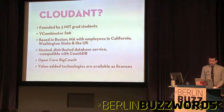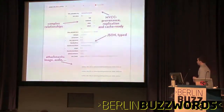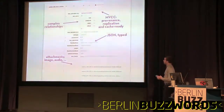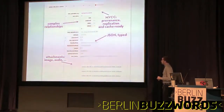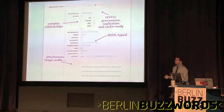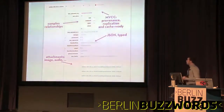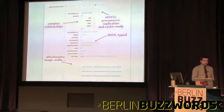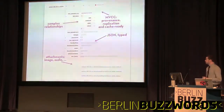Very quickly, CouchDB is a document database. This is what a document looks like — it's JSON with types, for example with dates. You can have attachments: audio files, image files, anything like that. It doesn't go in as a blob like in MySQL; it's just stored in the file system. You can handle complex relationships and hierarchies with arrays. And you have multi-version concurrency control with IDs and revisions.